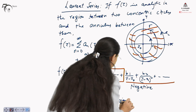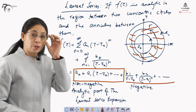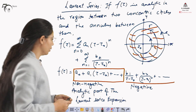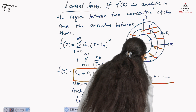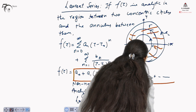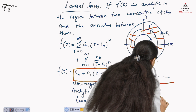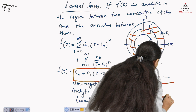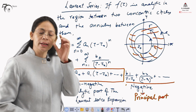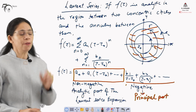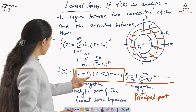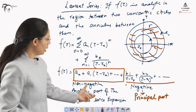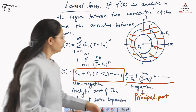The portion which has the negative powers of (z minus z naught) is called the principal part of the Laurent series expansion of f(z). So the Laurent series consists of both parts: the analytic part containing non-negative powers, and the principal part containing negative powers of (z minus z naught).